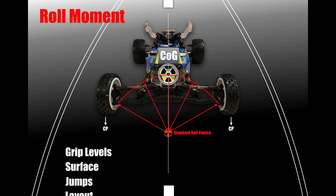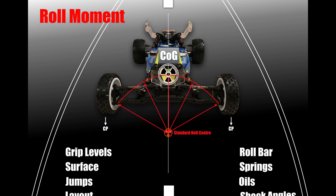Once you've got your roll centre behaving the way you want it to in relation to your centre of gravity, there are ways of tuning the roll centre and how the car rolls. That might be a roll bar, your springs, oils in your dampers, and the shock angles. There are a few ingredients that will change the behaviour of the car once you've set the roll centre.